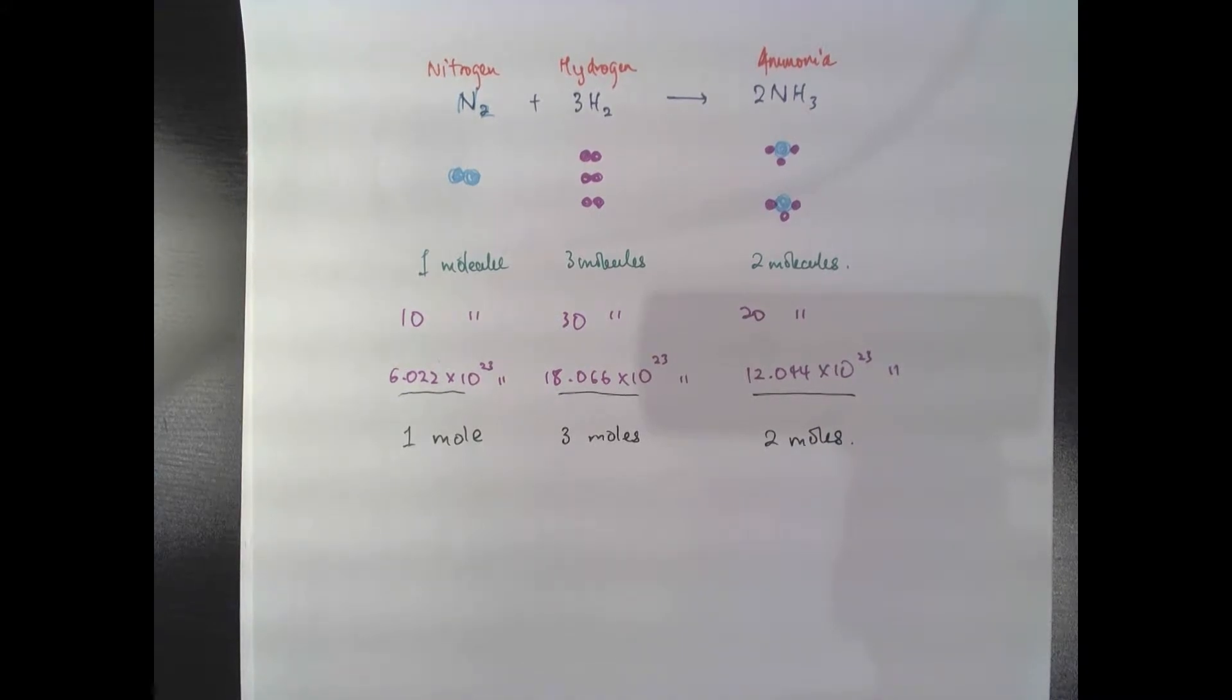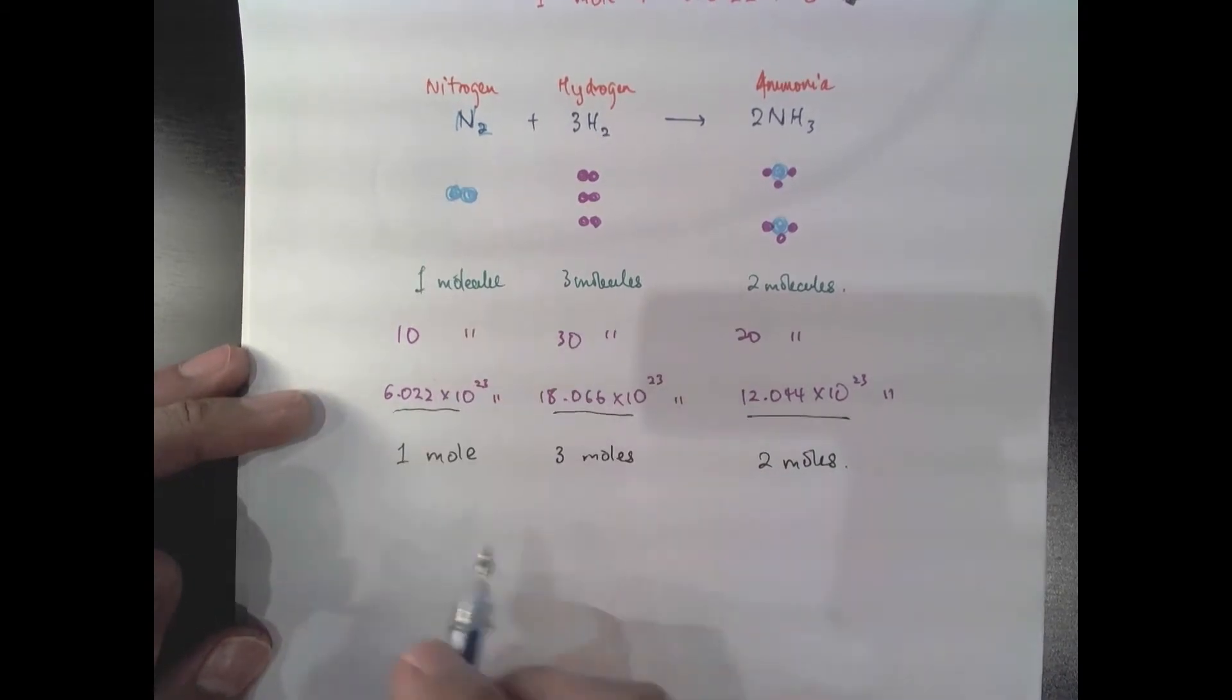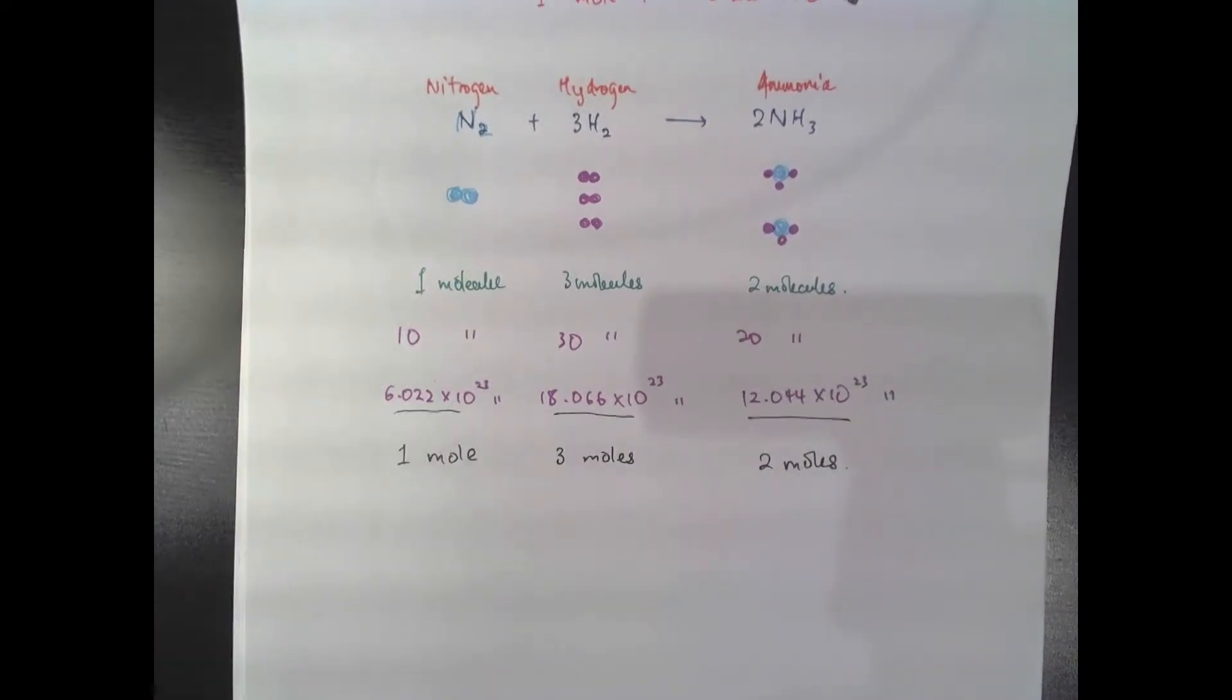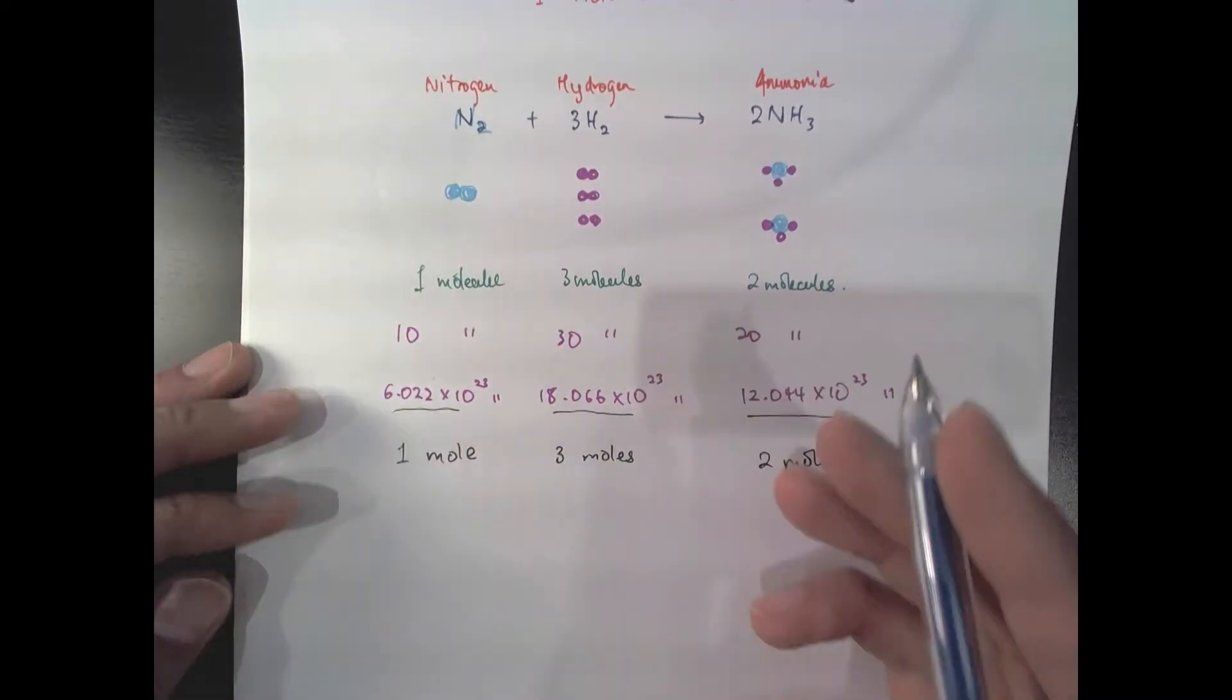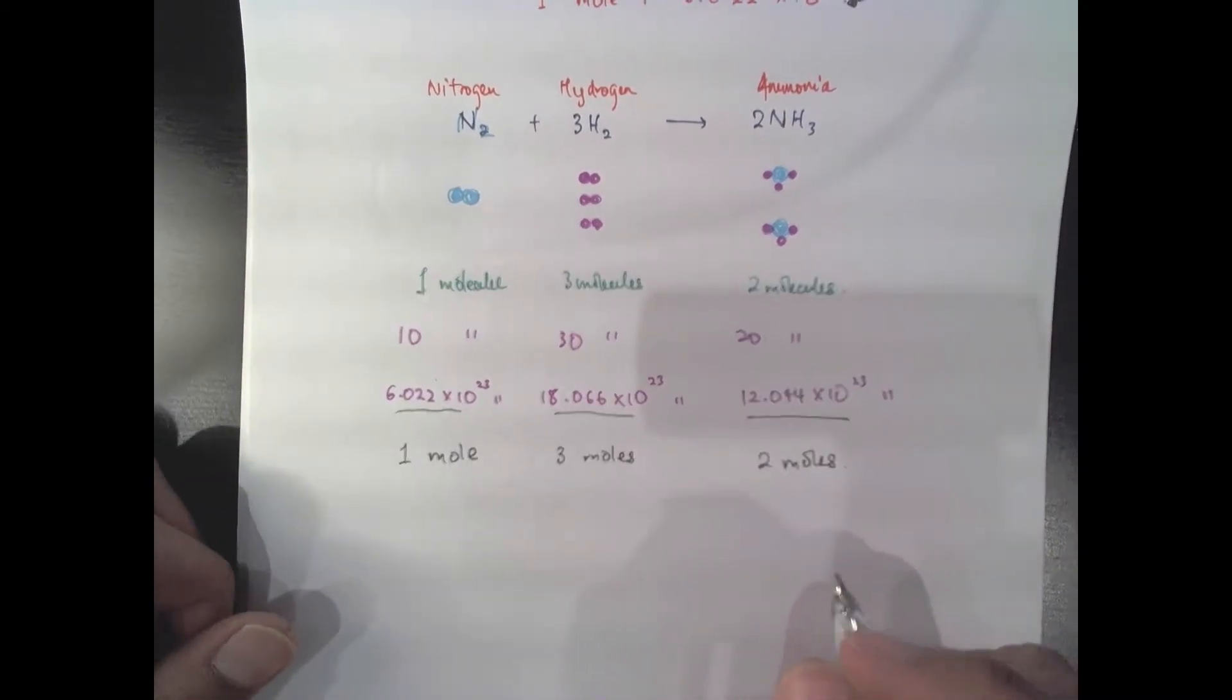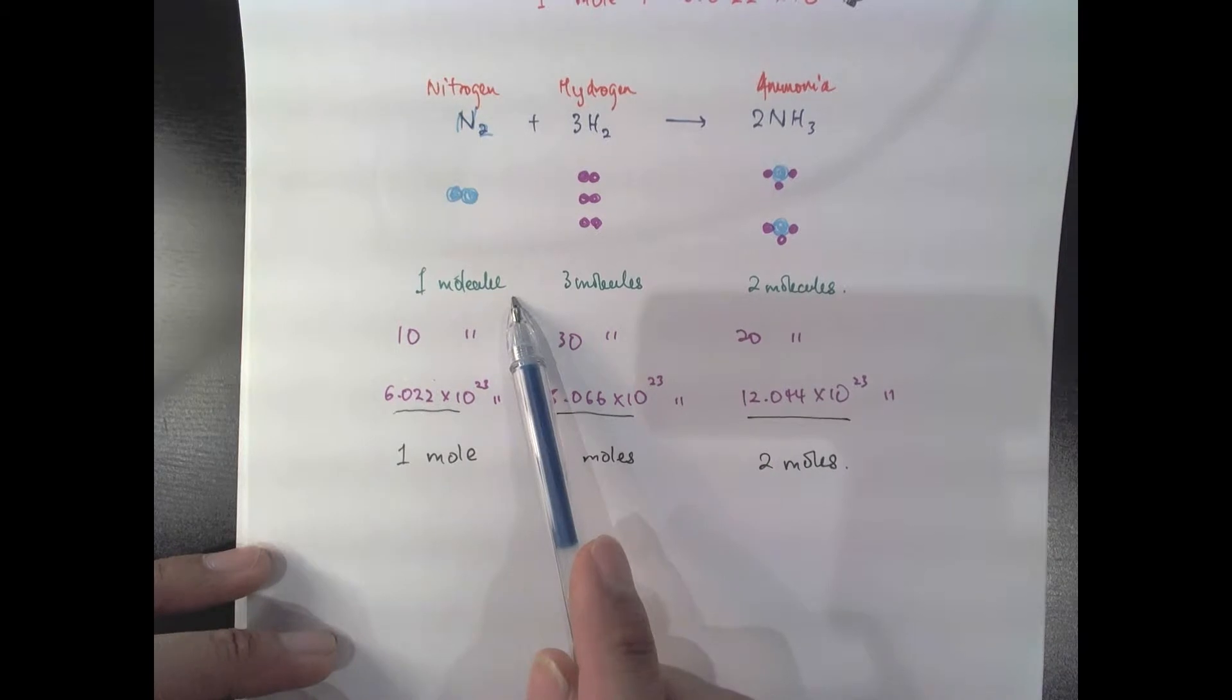So what you ask. Why do we need to call it moles? Why can't we just say molecules? Why do we need moles? So it turns out that because atoms are so light, it doesn't make sense in the lab. We can't really measure the mass of one molecule of nitrogen.